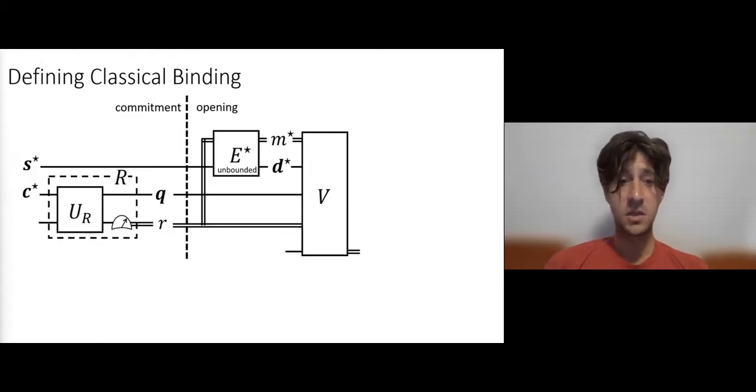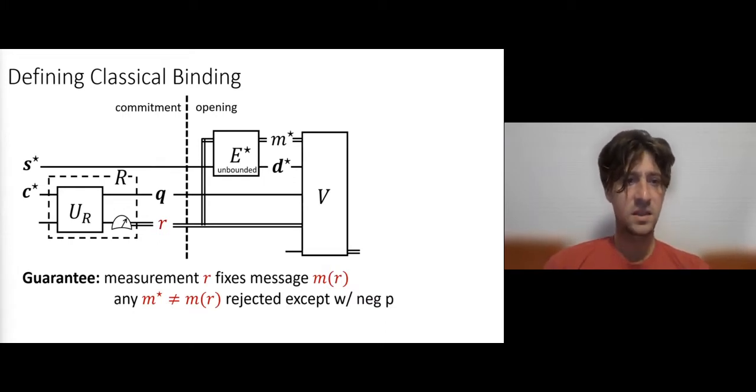In any case, the equivocator then generates a message, M star, together with the decommitment information, D star, intuitively with the goal of breaking whatever binding was created in the commitment phase. So what's exactly the guarantee here? The commitment should guarantee that the equivocator basically fails, and specifically, we want the measurement R to fix a single message, M, which is only a function of R, the classical string R, the result of the measurement. So that any opening to a different message, M star, is going to be rejected by the verifier with overwhelming probability. So in this sense, it is classically binding. There's a single message fixed by the commitment, and it is impossible to later divert from it.